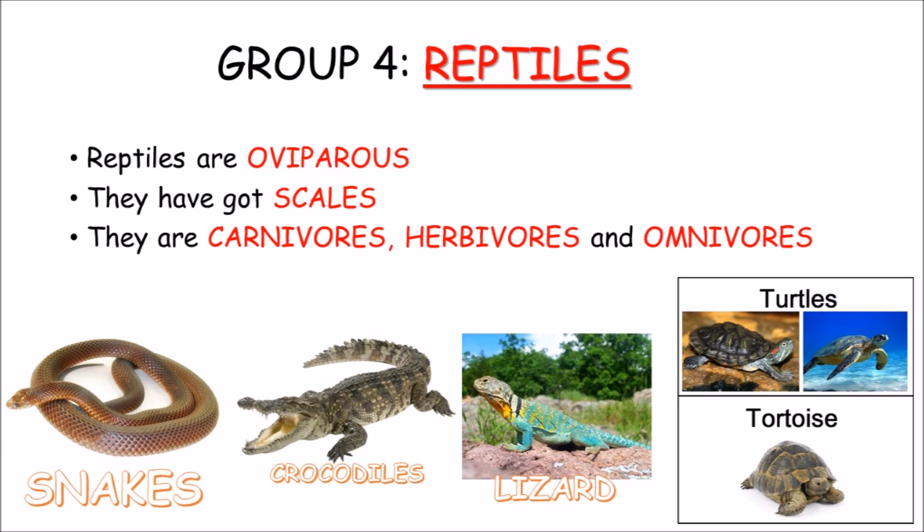Reptiles are oviparous. They use scales to protect their bodies. They are carnivores, herbivores and omnivores. Snakes, crocodiles, lizards and tortoises are reptiles.